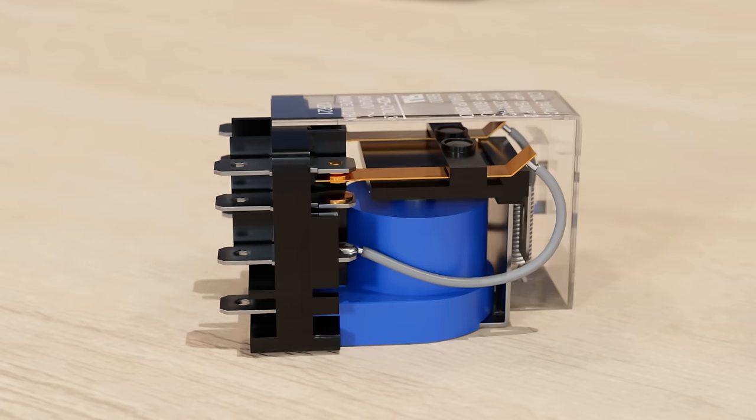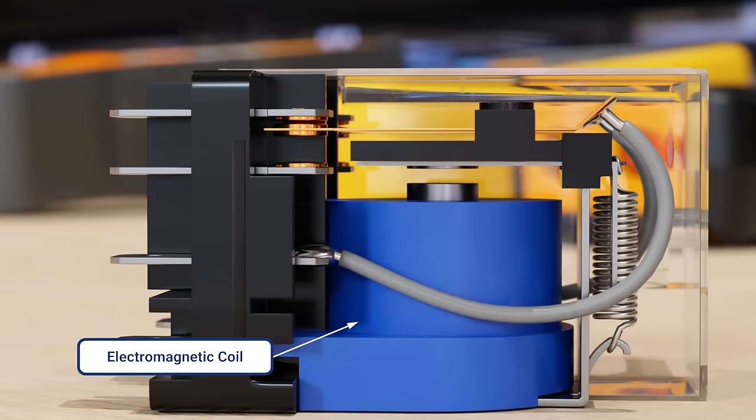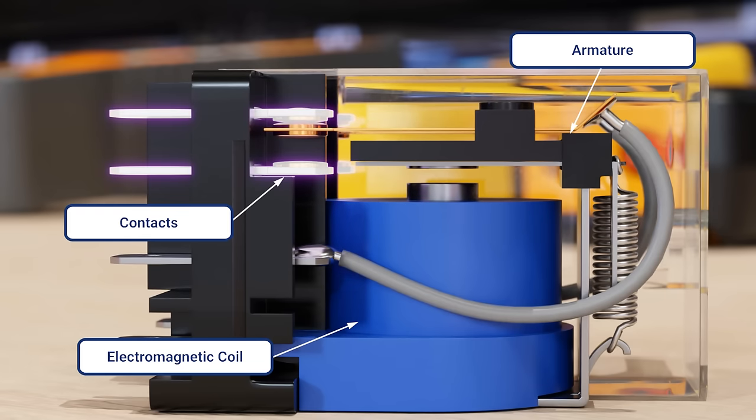Now let's show the Ice Cube Relay. The Ice Cube Relay is named for its clear, cube-like casing. And just like the 9340, it has a coil, an armature, and contacts.